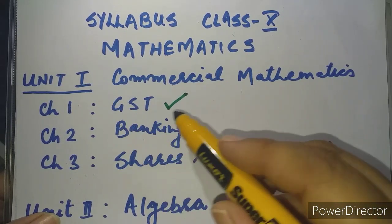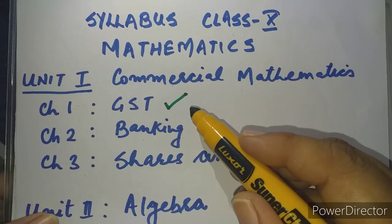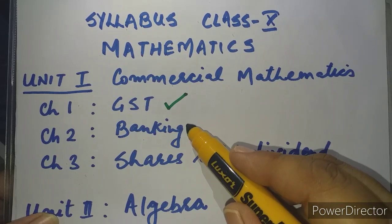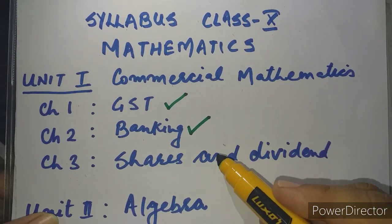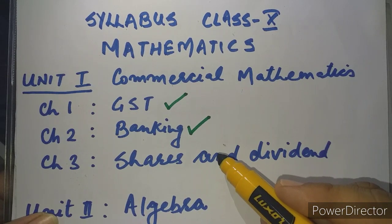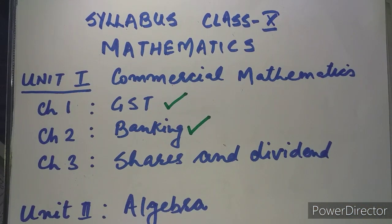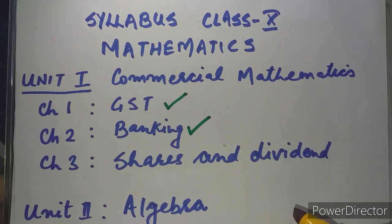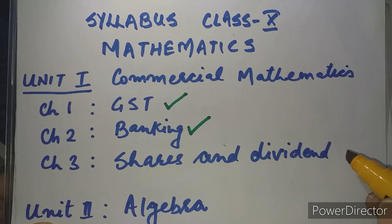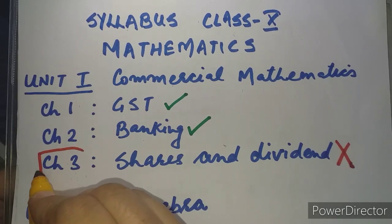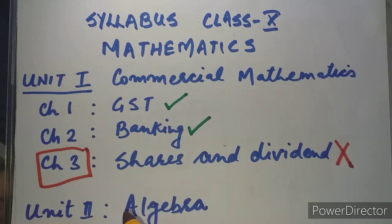GST completely has been taken up in the 2021 syllabus. Banking also gets a green signal because the full chapter has been taken as it is. Then comes Shares and Dividend — Shares and Dividend has been totally removed from the syllabus of 2021, so this gets a red signal. Chapter 3 has been totally removed from the new syllabus.